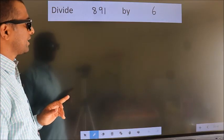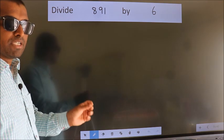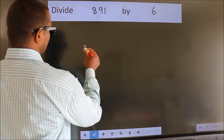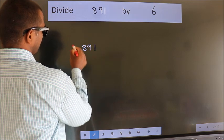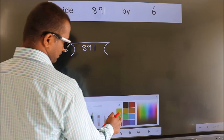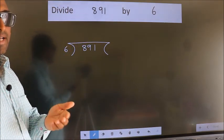Divide 891 by 6. To do this division, we should frame it in this way: 891 here, 6 here. This is your step 1.